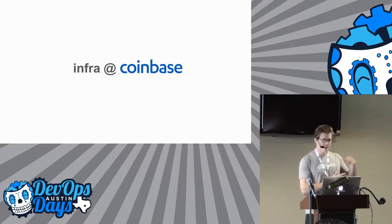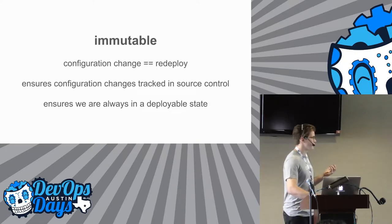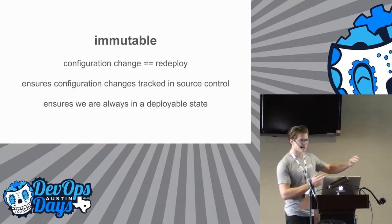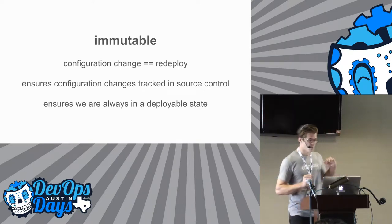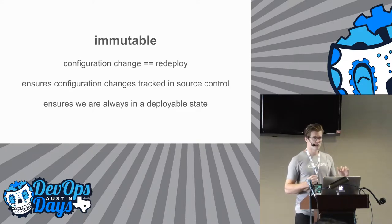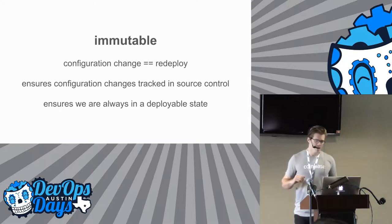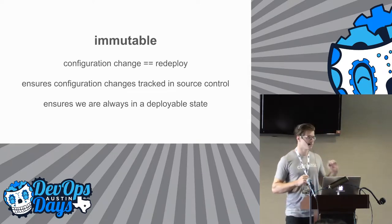Before diving into blockchain nodes and what we're doing around that, I want to talk about how the infrastructure at Coinbase is structured because of these security requirements. There are really two primary concerns and guiding principles to our overall infrastructure, and that is everything is both immutable and ephemeral. What I mean by immutable is that any configuration change, any environment variable change, anything like that requires a redeploy of 99% of our services. This ensures that every configuration change is tracked in source control and also ensures that we're always in a deployable state.